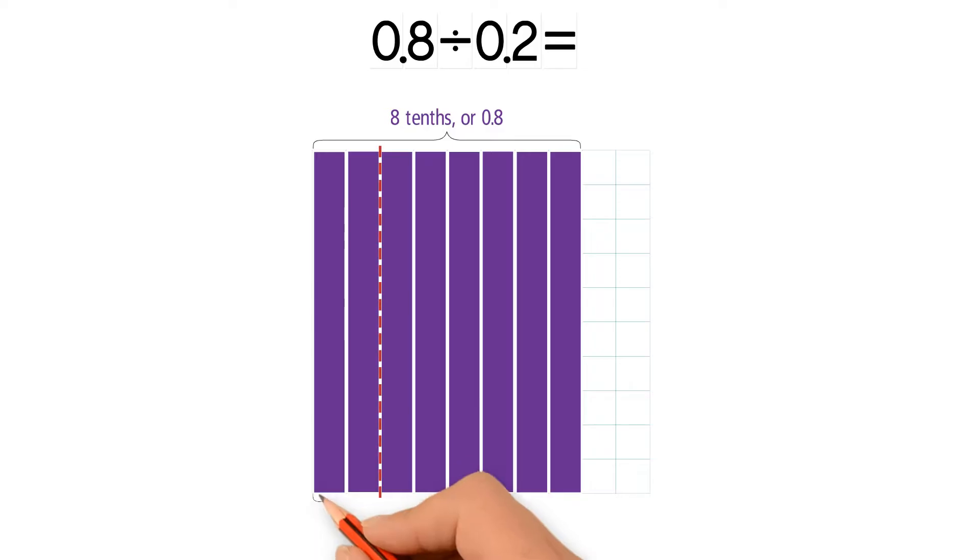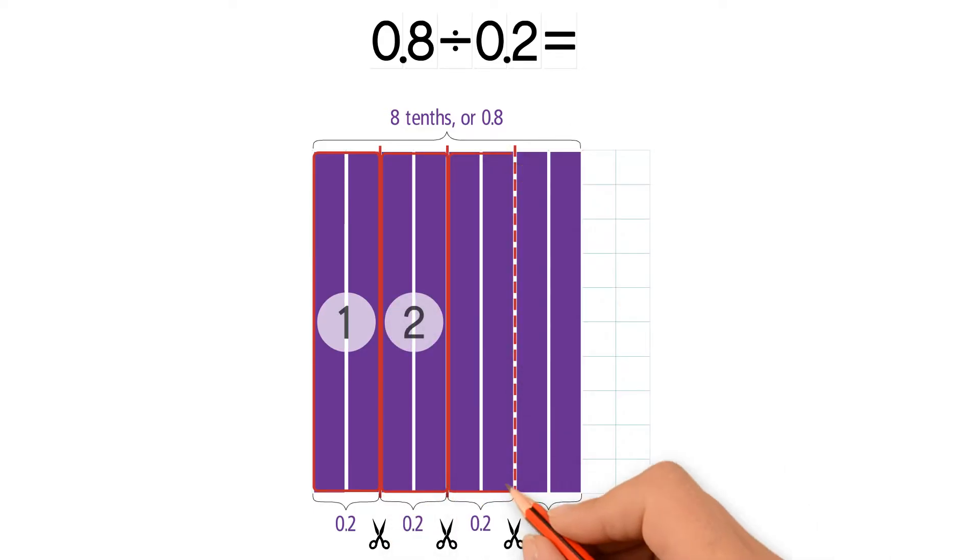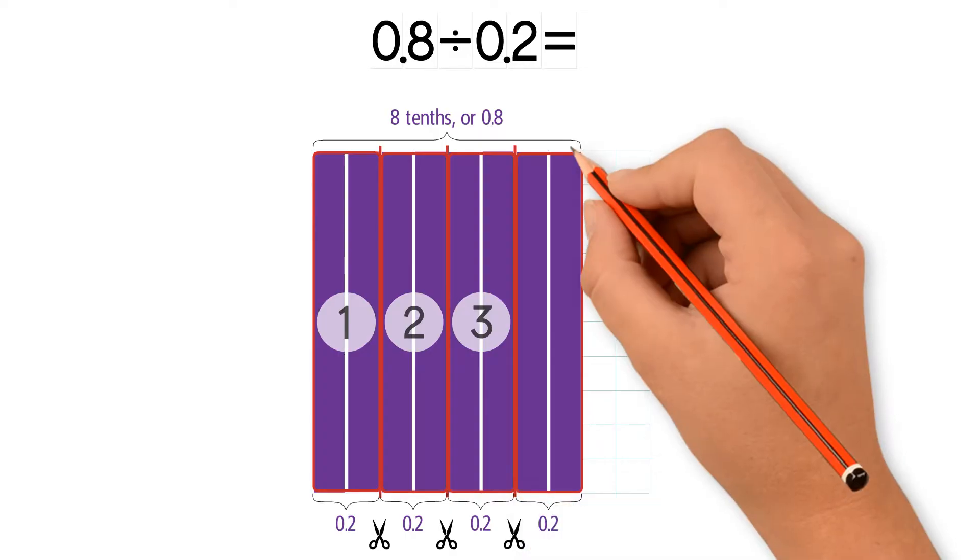Next, we divide the 8 tenths into groups of 2 tenths to represent the divisor, which is 0.2. Now we count the groups. There are 4 groups of 0.2 in 0.8. So 0.8 divided by 0.2 equals 4.